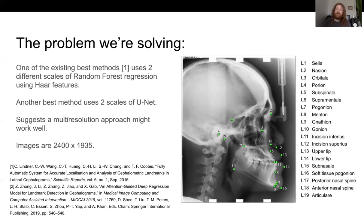This dataset has 400 images labeled by two different medical doctors and we're going to see if we can learn how to label these landmarks. One of the best existing methods uses two different scales of random forest regression using hard features and a more recent method uses two scales of U-Net. This already suggests a multi-resolution approach might work well. Makes sense because the images are 2400 by 1935 pixels.